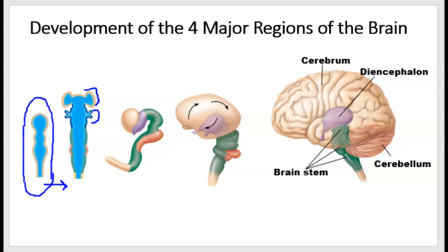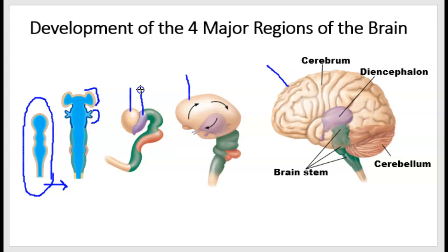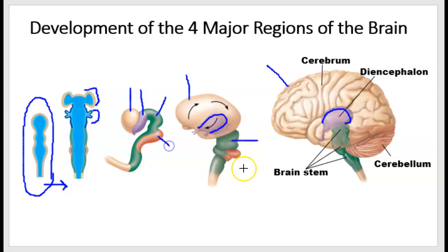These swellings give rise to the four main regions of the brain that are present at birth. The four main regions are the cerebrum, colored beige — that's the first part of the neural tube, and you can see how it enlarges. The diencephalon, colored purple, is the second part and due to folding moves to the interior of the brain. The third region is the brain stem, colored green, and the fourth region is the cerebellum, colored salmon or pinkish, and it enlarges over time.